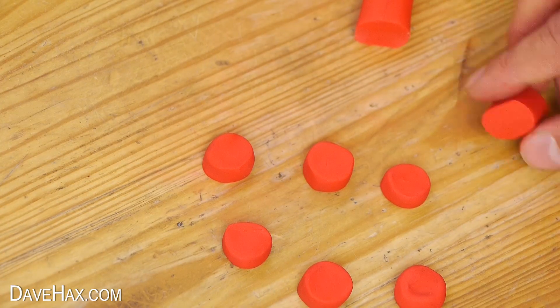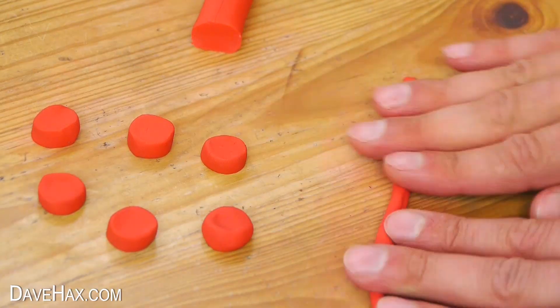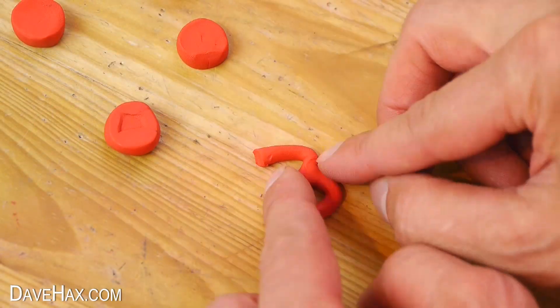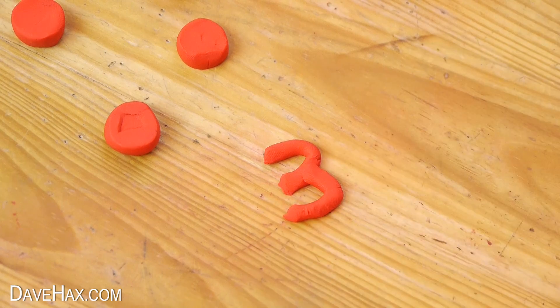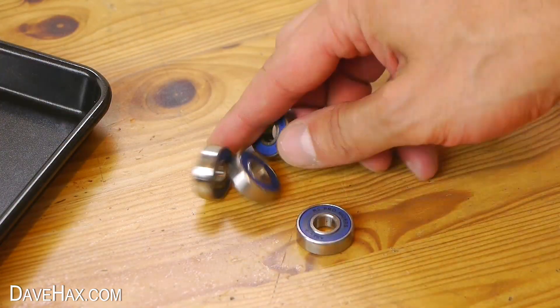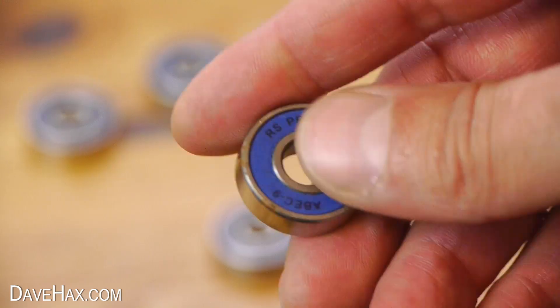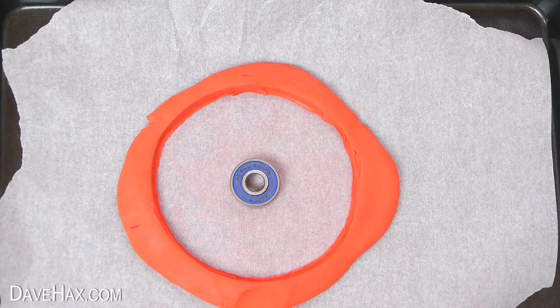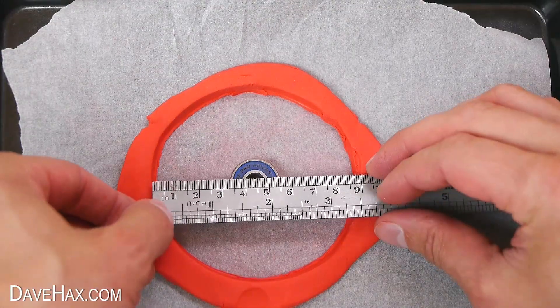Next I took a bit more plasticine and curled it round to form the number 3. I used one of these skateboard wheel bearings for the spinner and measured to make sure it was center of the mould.